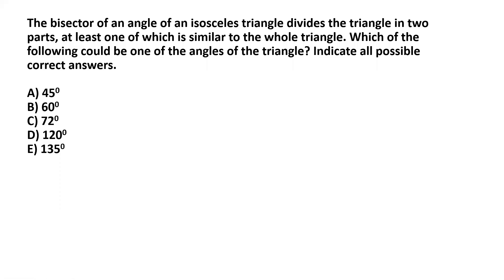The bisector of an angle of an isosceles triangle divides the triangle into two parts, at least one of which is similar to the whole triangle. Which of the following could be one of the angles of the triangle? Indicate all possible correct answers. This is a multiple choice question where more than one answer will be correct.